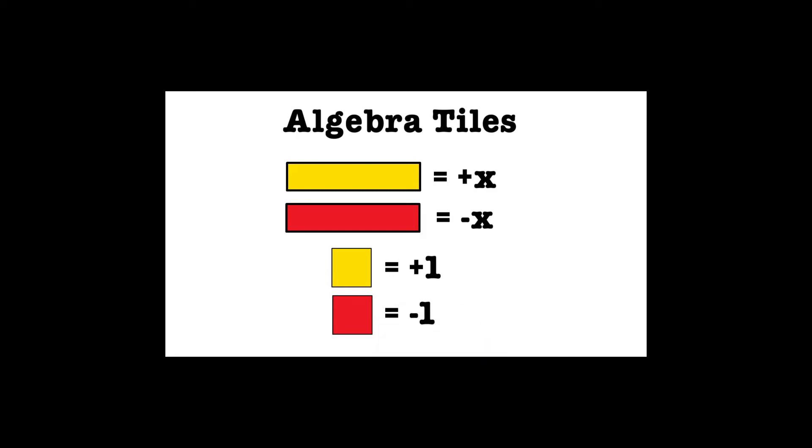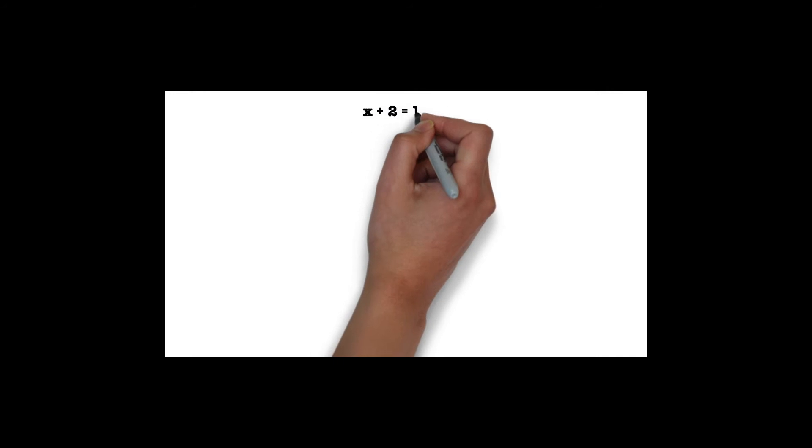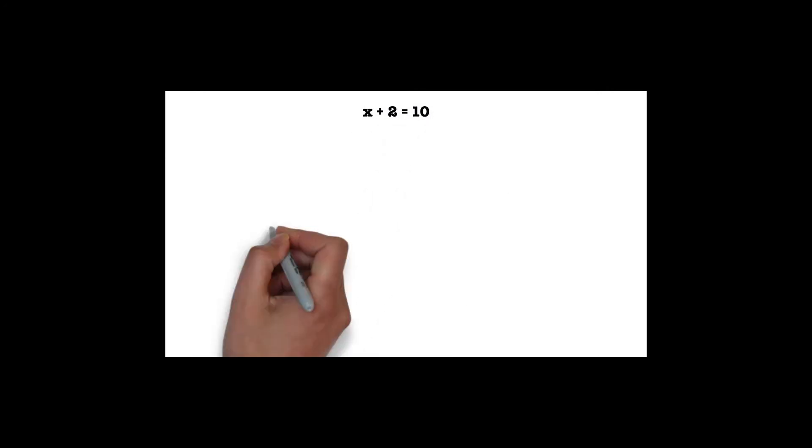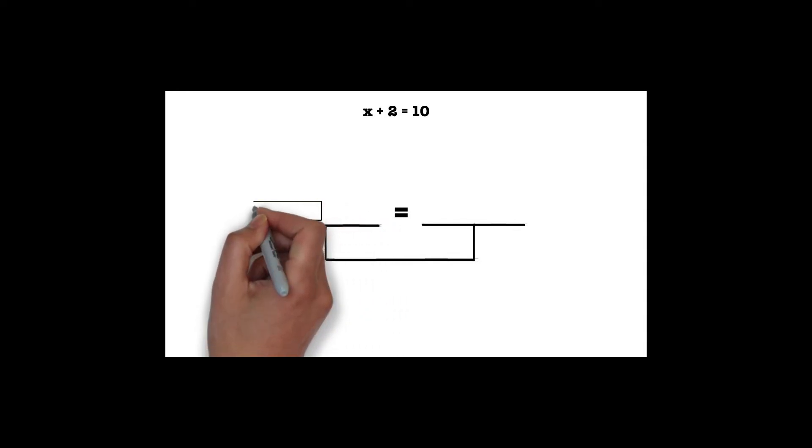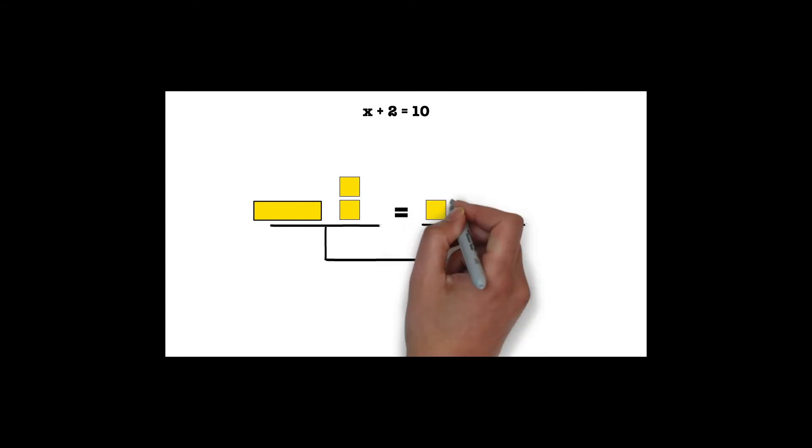Let's start with the problem x plus 2 equals 10. Remember that the equal sign represents the middle of the scale. To model x plus 2 to the left of the equal sign, we will use a yellow rectangle, which represents positive x, and two yellow squares, since the equation has plus 2. On the right side of the equal sign, we will have 10 yellow squares.